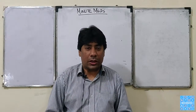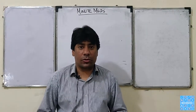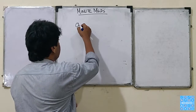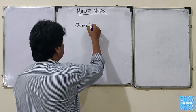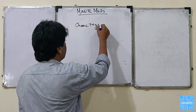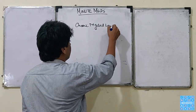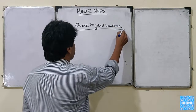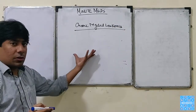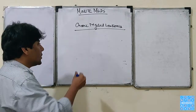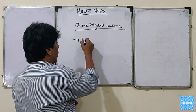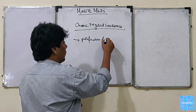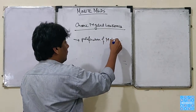Welcome to MinuteMax. We are going to study a little about chronic myeloid leukemia. What this actually means is that it is a proliferation of myeloid cells.